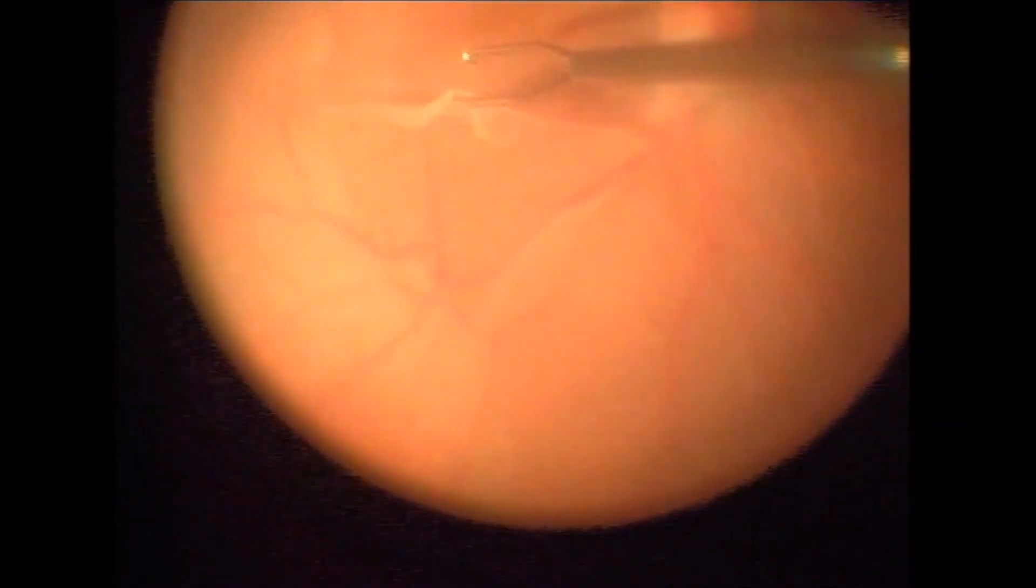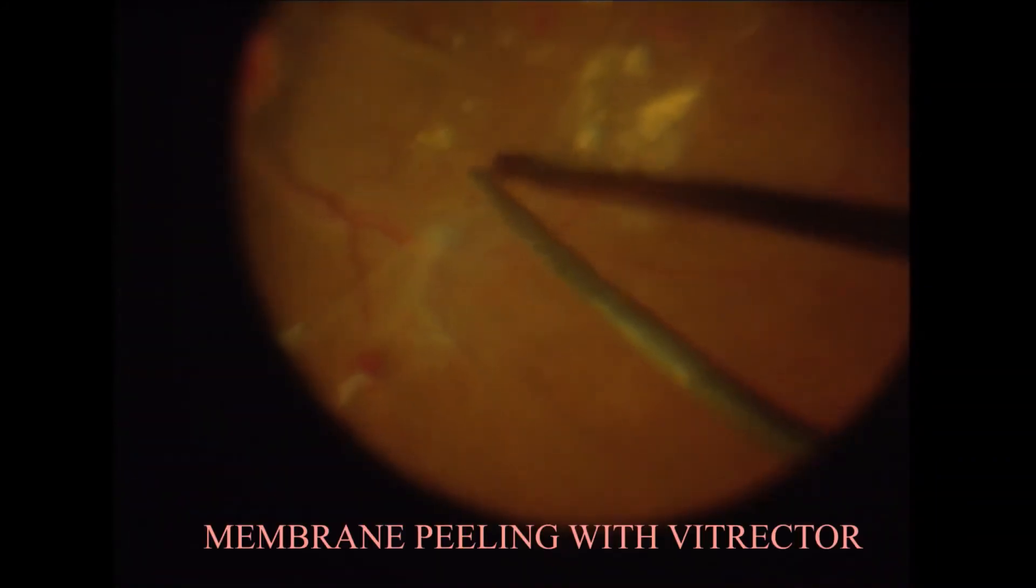This video demonstrates the use of forceps to peel off the membrane from the posterior pole. The vitrectomy probe is used to remove the membrane using suction.